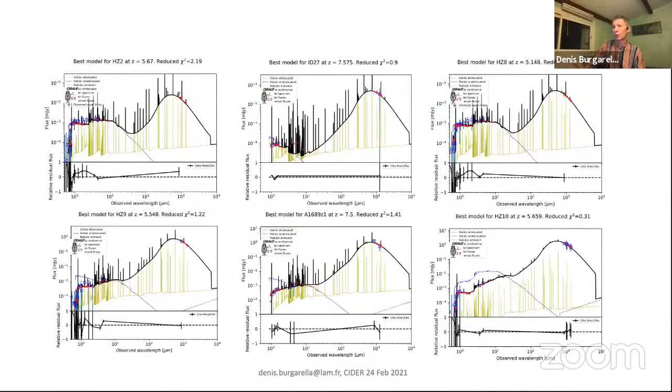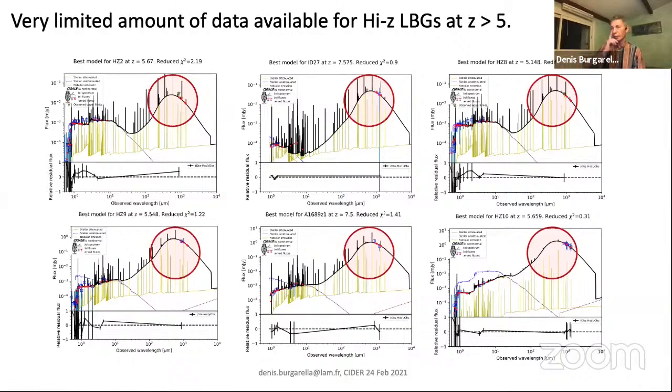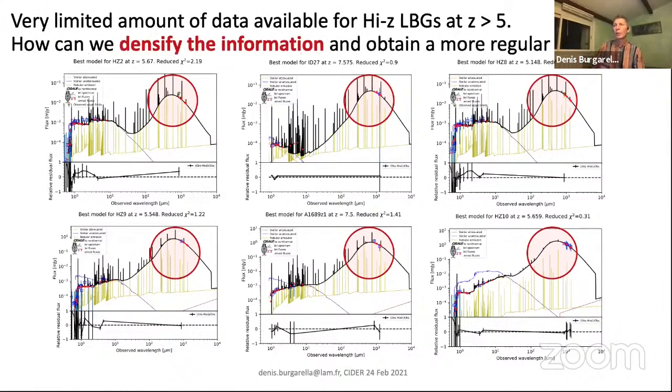Sometimes we have C-II detections that we use to further constrain, and finally we fitted these objects with the code CIGALE. As you can see here, we have a few objects from the previous list. It's immediately obvious that we don't have a lot of data in most objects—these are upper limits. Sometimes we have a few points, but it's very difficult and we cannot constrain the dust characteristics and dust emission in the rest-frame far-infrared. We can wonder how we can densify this information and get more regular sampling.